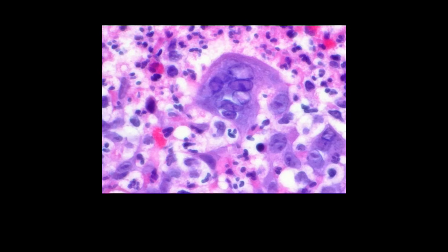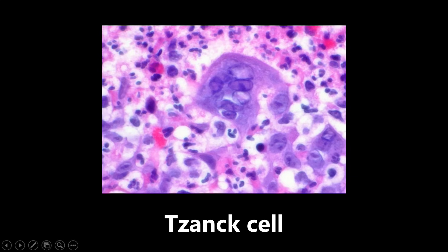This next image is an example of a Tzanck cell, seen on a Tzanck smear. This test isn't done very much anymore — it's used to find these kinds of multinucleated Tzanck cells, but it can't differentiate between herpes simplex or varicella zoster. So the test itself isn't commonly done, but the image and the association with the Tzanck test, Tzanck smear, is still high yield for the boards.